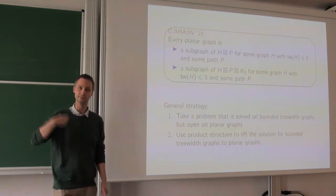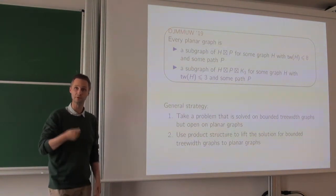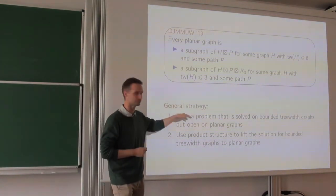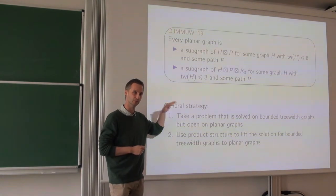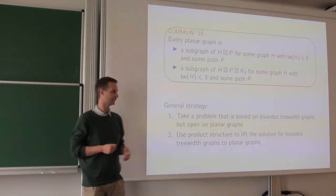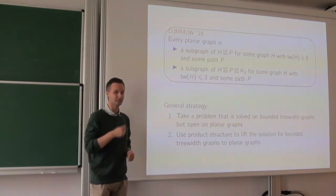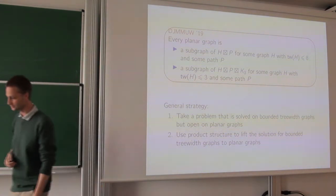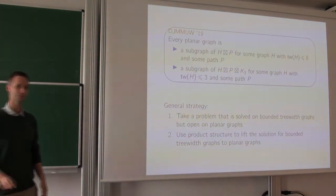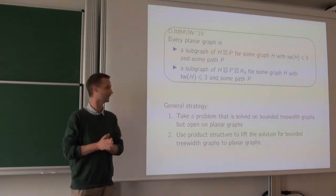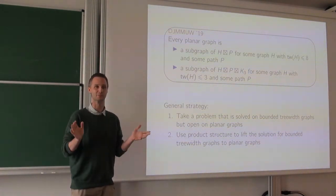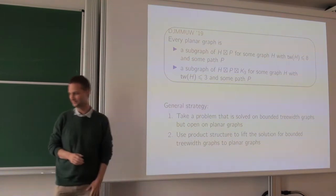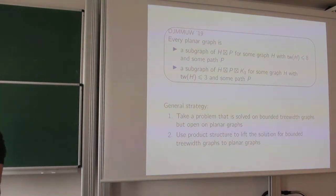That's the basic strategy. If you want to bound some graph invariant for planar graphs, you need it to be bounded for bounded treewidth graphs. You need to understand the proof well and hope it behaves nicely when you take the strong product with a path. Sometimes it works — I should be fully honest and mention that I have tried this strategy on many open problems and most of the time it fails, but in a few cases it works.